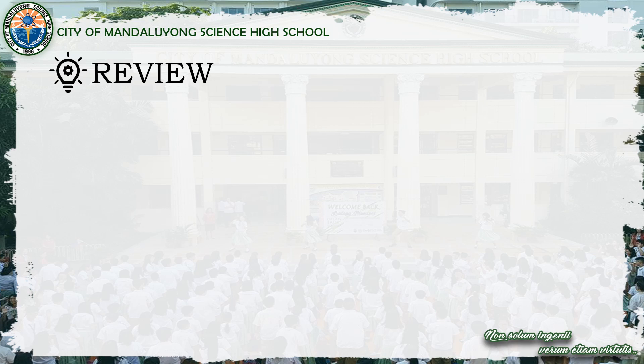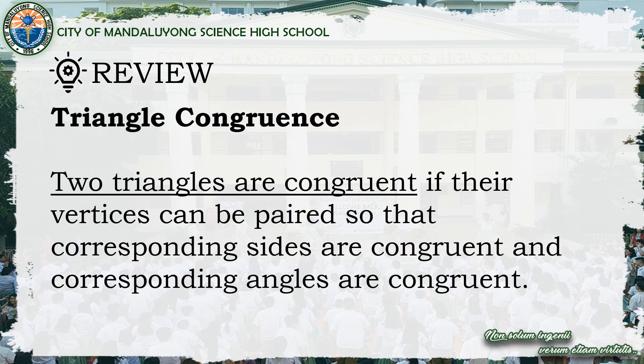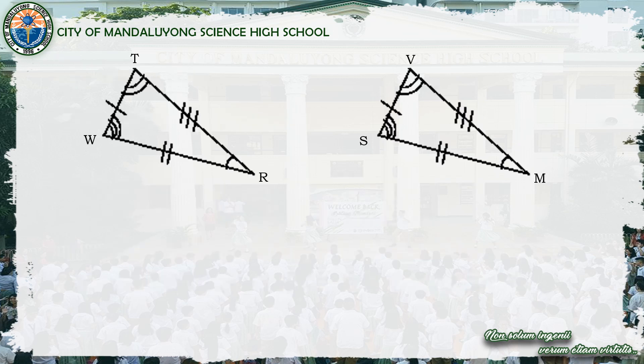Let's start with the review of the concept of triangle congruence. Two triangles are congruent if their vertices can be paired so that corresponding sides are congruent and corresponding angles are also congruent. Here is an illustration as an example: we have triangle RTW and triangle MVS, and based on the marks given on the figure, we can say that triangle RTW is congruent to triangle MVS.